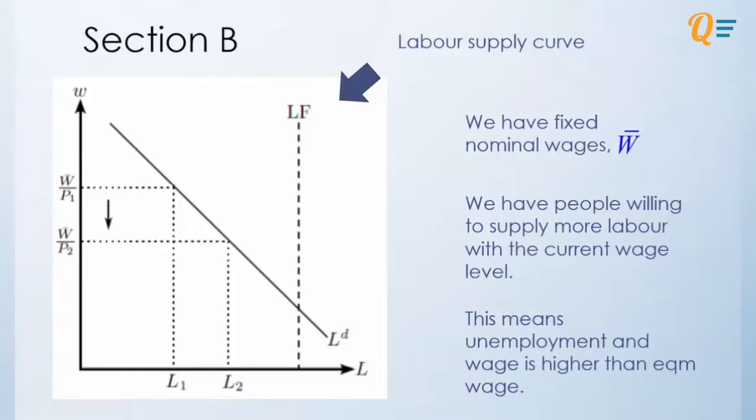And note that the vertical axis is actually the real wage. So what this means is that we have people willing to supply more labor with the current wage level. This means that unemployment and wage is higher than equilibrium wage because of sticky wage. So whenever price increases, we see a decrease in real wage.